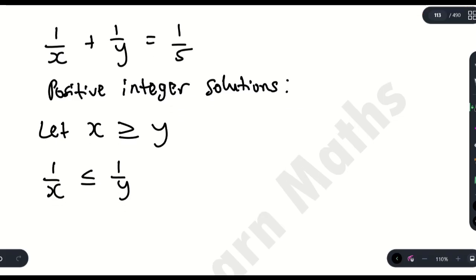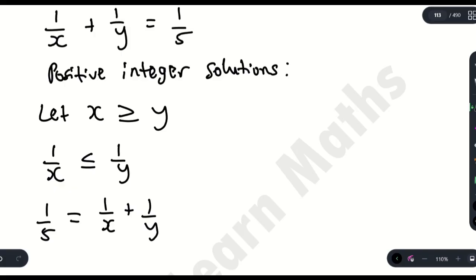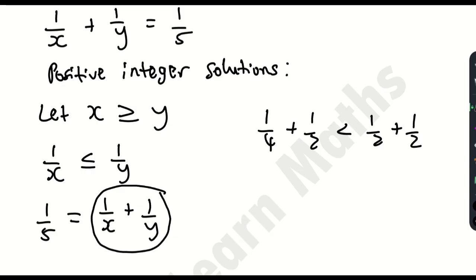Now let's continue. Because we have this inequality, we can say that 1/5 equals 1/x + 1/y from the question. Like when I said 1/4 is less than 1/2 — if I add 1/4 to 1/2, this will be less than 1/2 + 1/2. I'm doing this because I want an inequality with only one variable, so it's easy to solve and get the range of values.